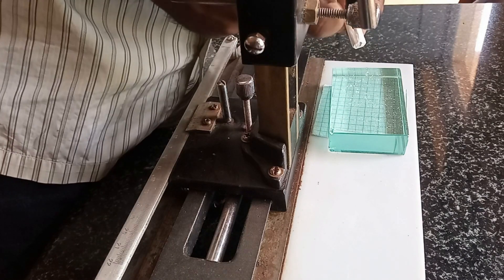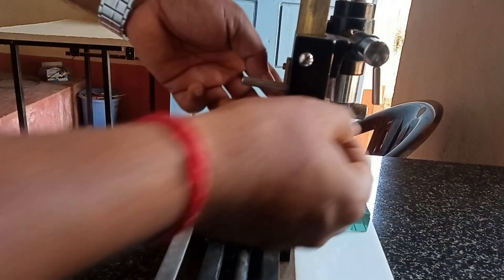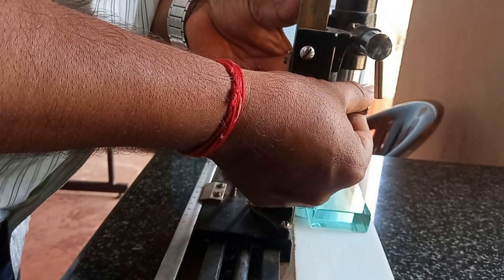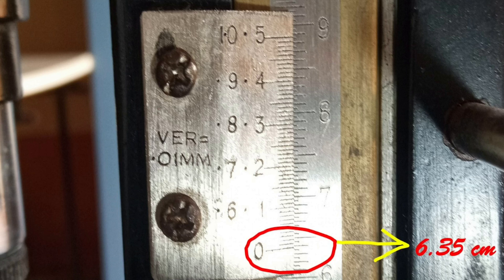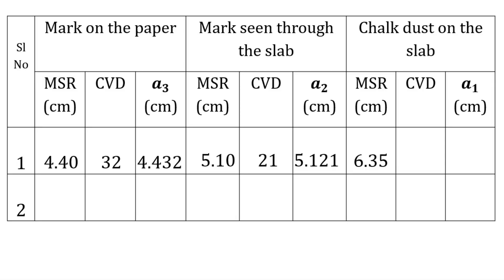We will sprinkle the chalk dust in the lab; the dust spreads on the surface. The chalk dust initially appears blurred because we are focused on the paper seen through the glass slab. Once the chalk dust is clear and visible, we record the new position of the traveling microscope. The MSR is 6.35 cm, TVD is equal to 43, giving a total reading of 6.393 cm. This is one set of readings.